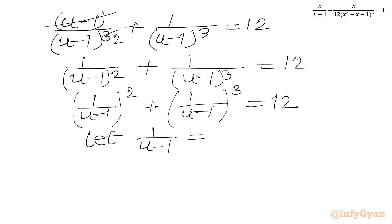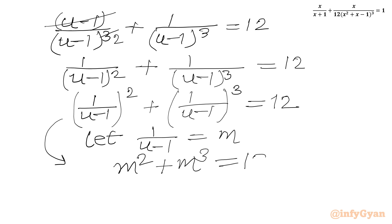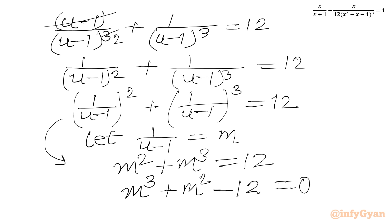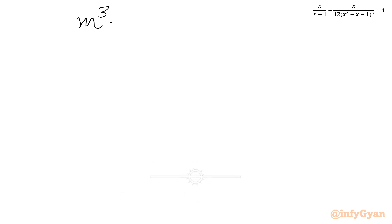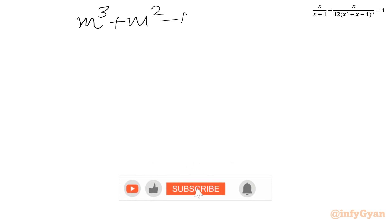Now we let m equal to 1 over (u minus 1). So our equation becomes cubic in m: m squared plus m cubed equal to 12, or we can write m cubed plus m squared minus 12 equal to 0.